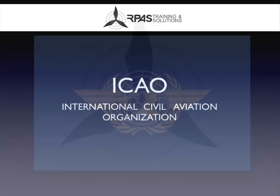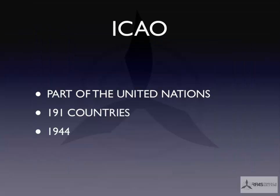ICAO is basically the worldwide United Nations version of CASR. It is part of the United Nations. There are 191 countries that are currently signatories to ICAO, and it was set up towards the end of World War II in 1944, when the United Nations realised that there was going to be a need to standardise air practices all around the world.